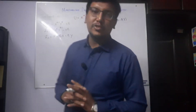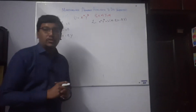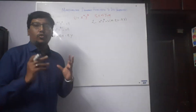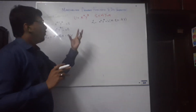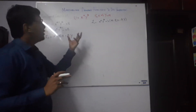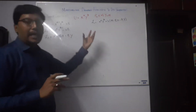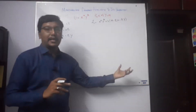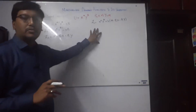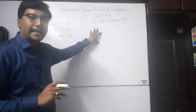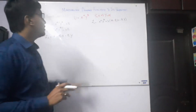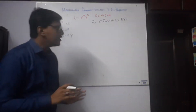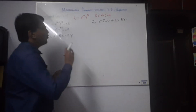Hello everyone, thanks for joining us. We are going to discuss the Marshallian demand function and its properties. We are using the utility function with a specific budget constraint, and by using the Lagrange multiplier we are going to derive our X and Y Marshallian demand functions, just like we discussed in utility maximization.